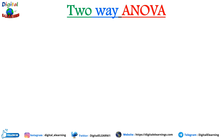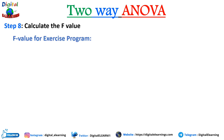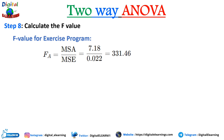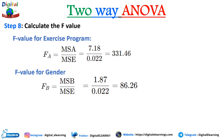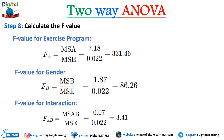Step eight: calculate the F-values. For exercise program: FA = MSA / MSE = 7.18 / 0.022 = 331.46. For gender: FB = MSB / MSE = 1.87 / 0.022 = 86.26. For interaction: FAB = MSAB / MSE = 0.07 / 0.022 = 3.45.